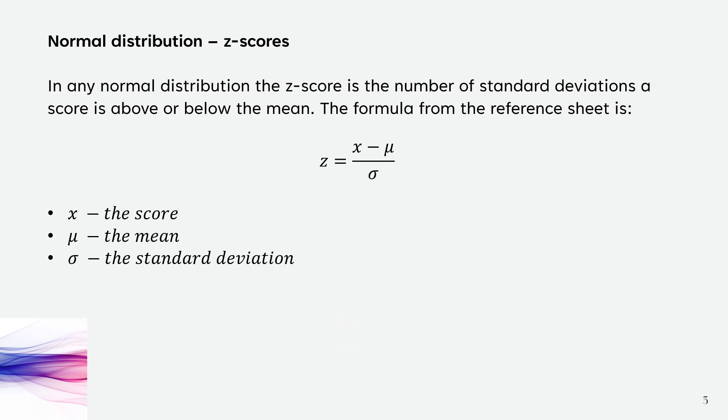So in any normal distribution, the z-score is a number of standard deviations a score is above or below the mean. The formula from your reference sheet is z equals x minus mu over sigma, where x is the score, mu is the mean and sigma is the standard deviation. We're going to look at how we actually use this to calculate z-scores.